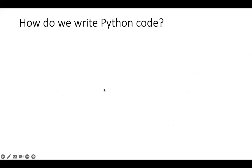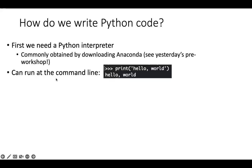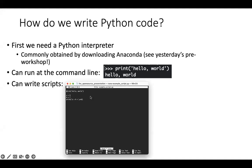How do we write Python code? We need a Python interpreter so the computer can interpret our code. Usually we don't have to think much about this — if running locally, we download Anaconda, which includes the interpreter plus many other things. You can run Python at the command line — for example, typing 'print hello world' will print 'hello world'. You can also write scripts, which are files with multiple lines of Python that run all together.